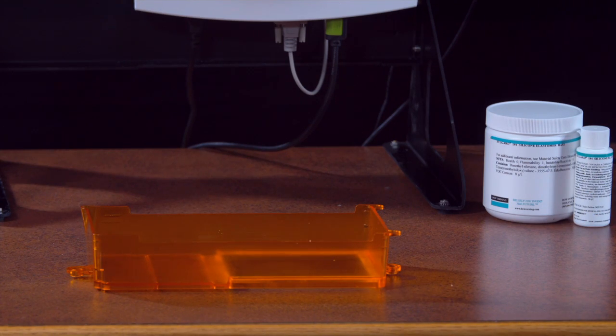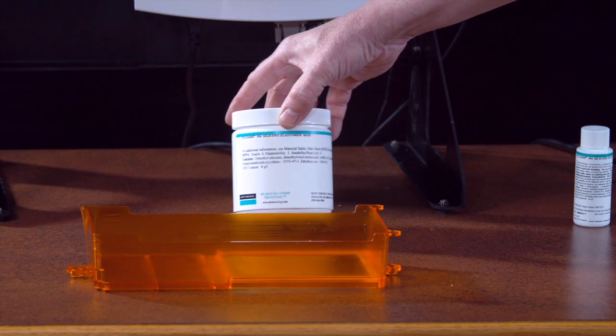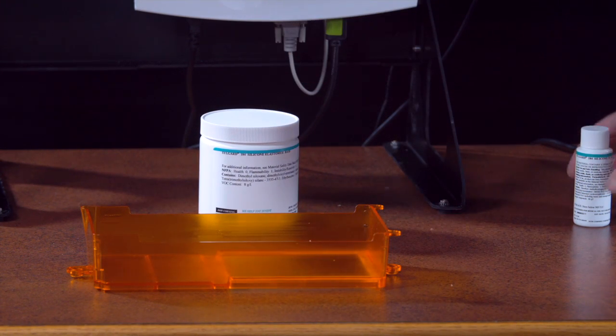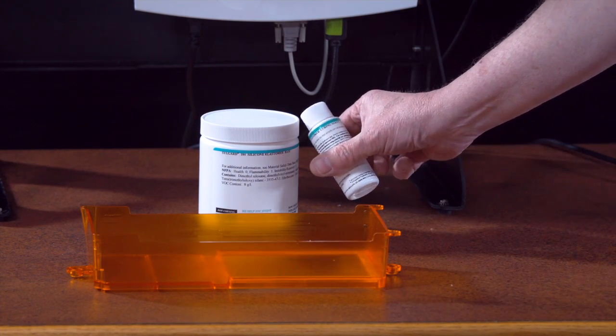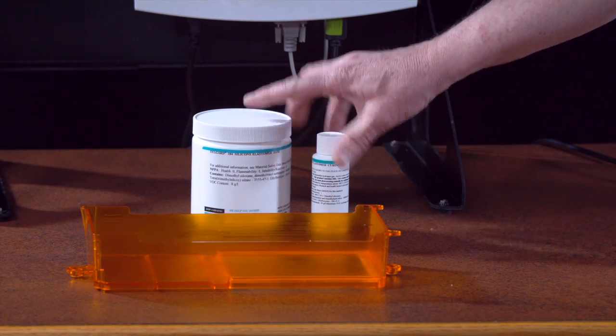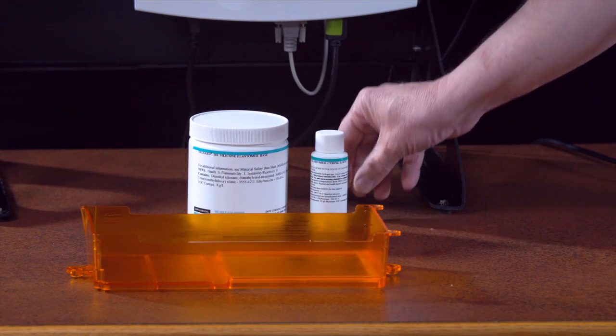To recoat, you're going to want some of the Silgard 184 elastic polymer base and curing agent. You can buy these kits online at various outlets.